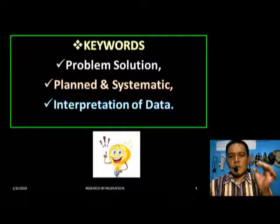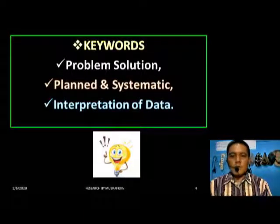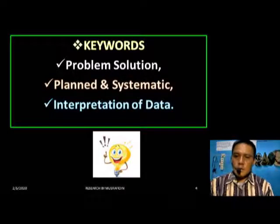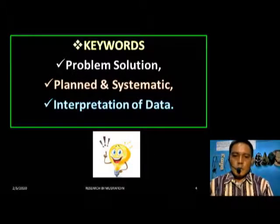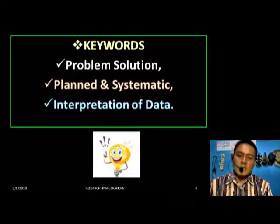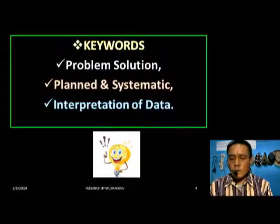Problem and solution means research must be associated with a problem. In other words, a researcher conducts research because there is a problem to be solved or answered. Planned and systematic means before you conduct the research, you must plan it well. In order to have a valid conclusion, the data must be interpreted — that is the third keyword: interpretation of data.